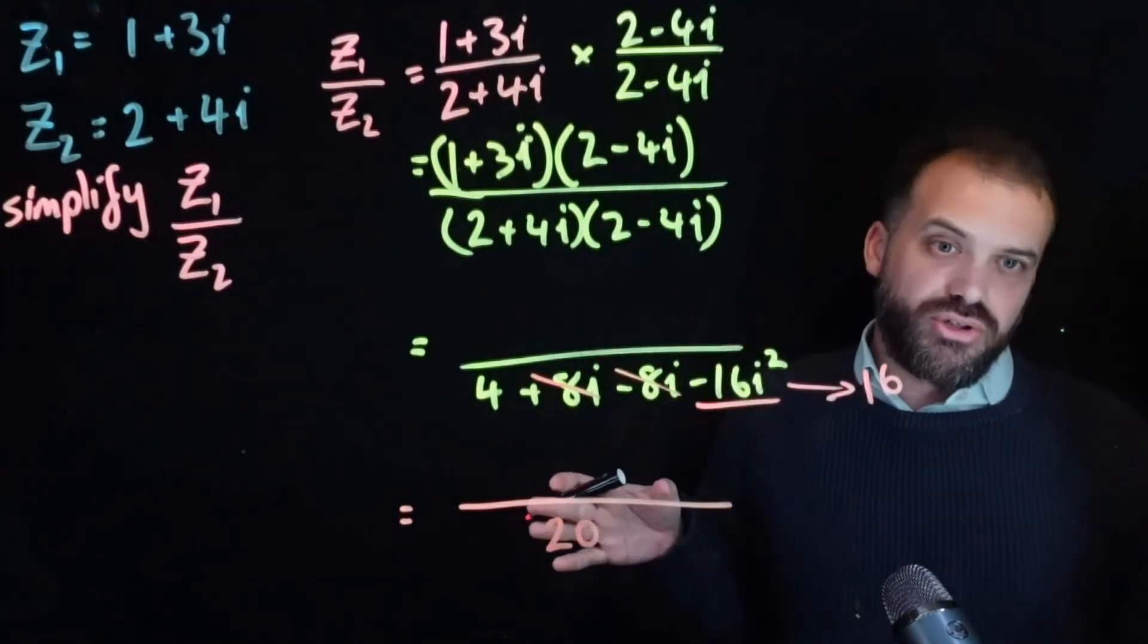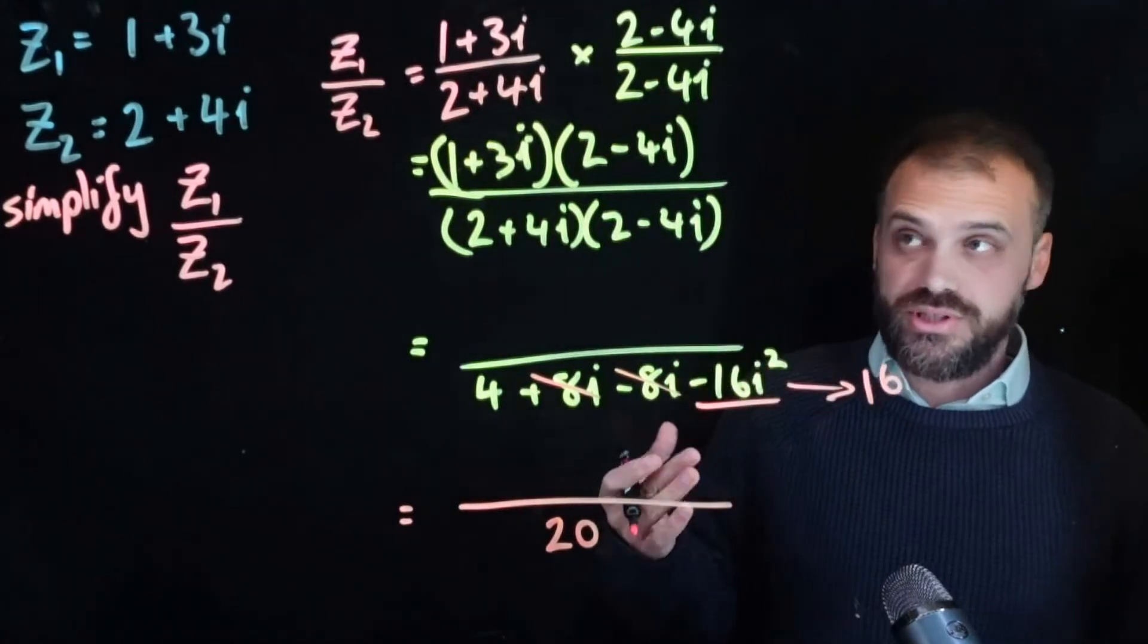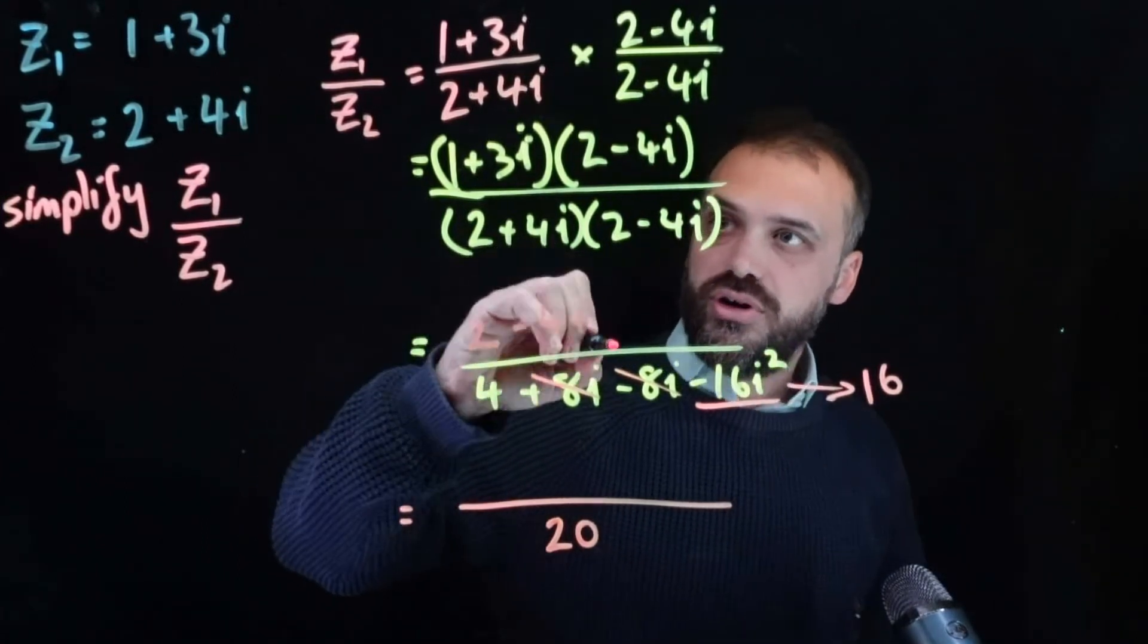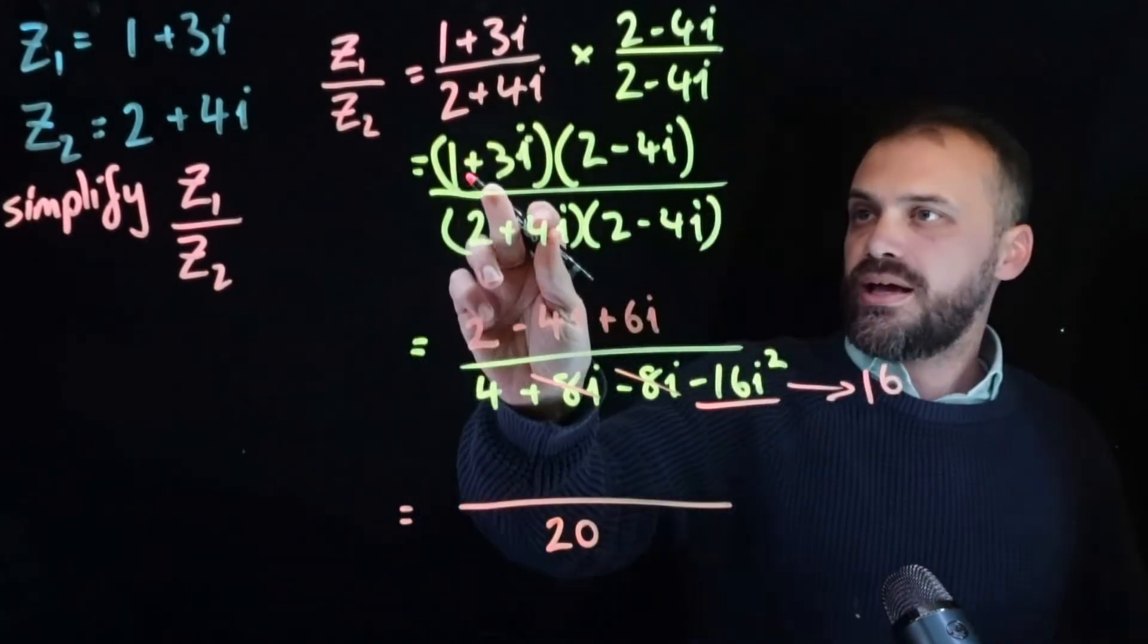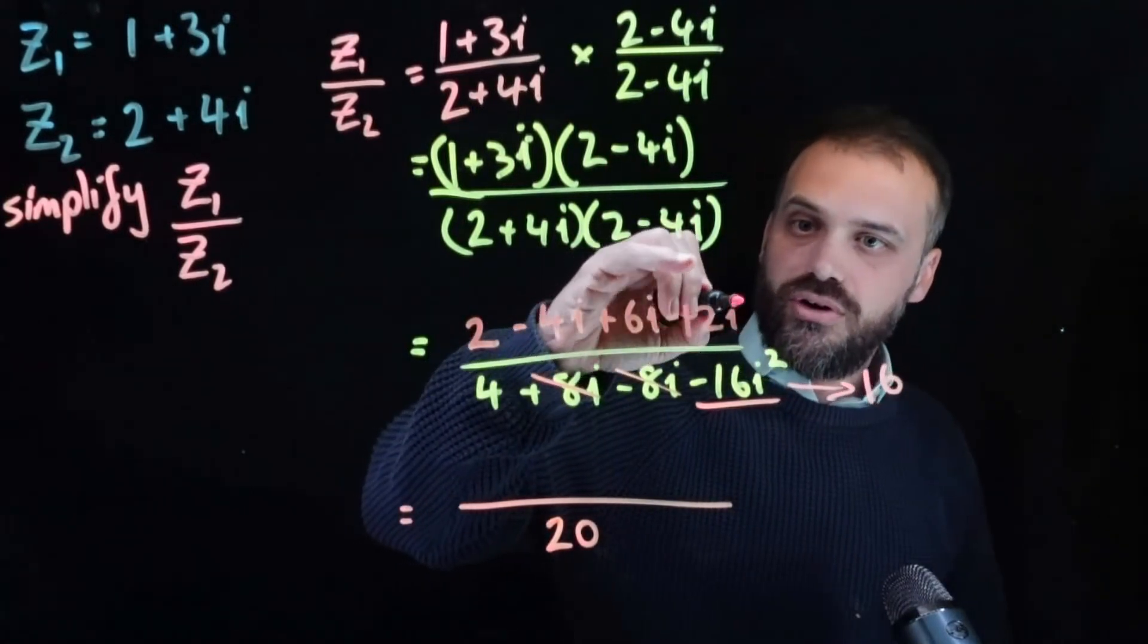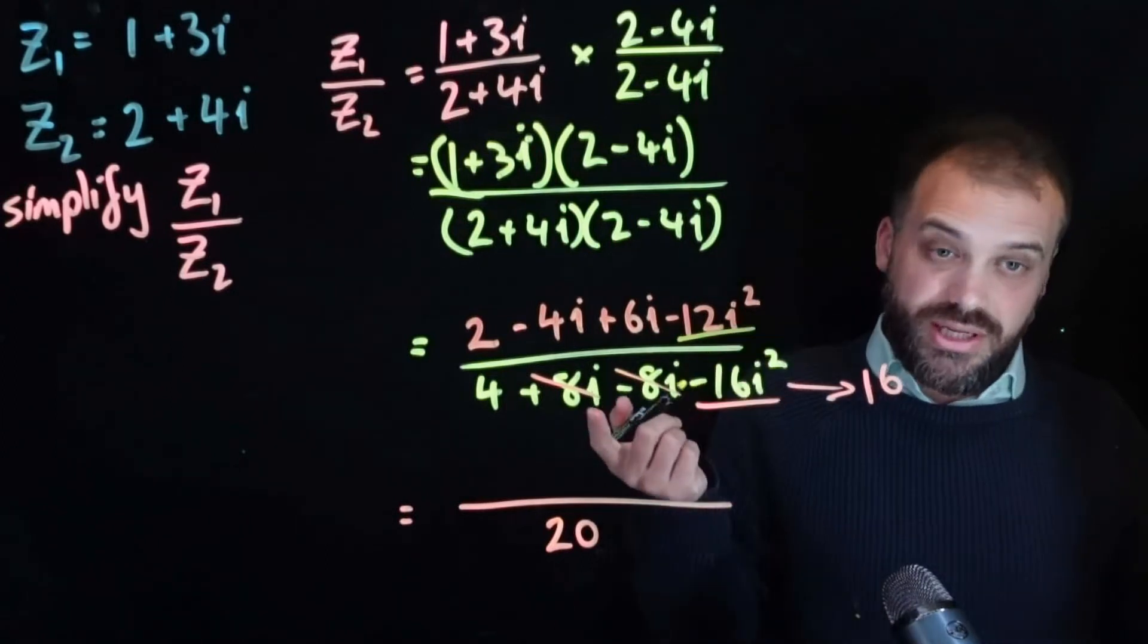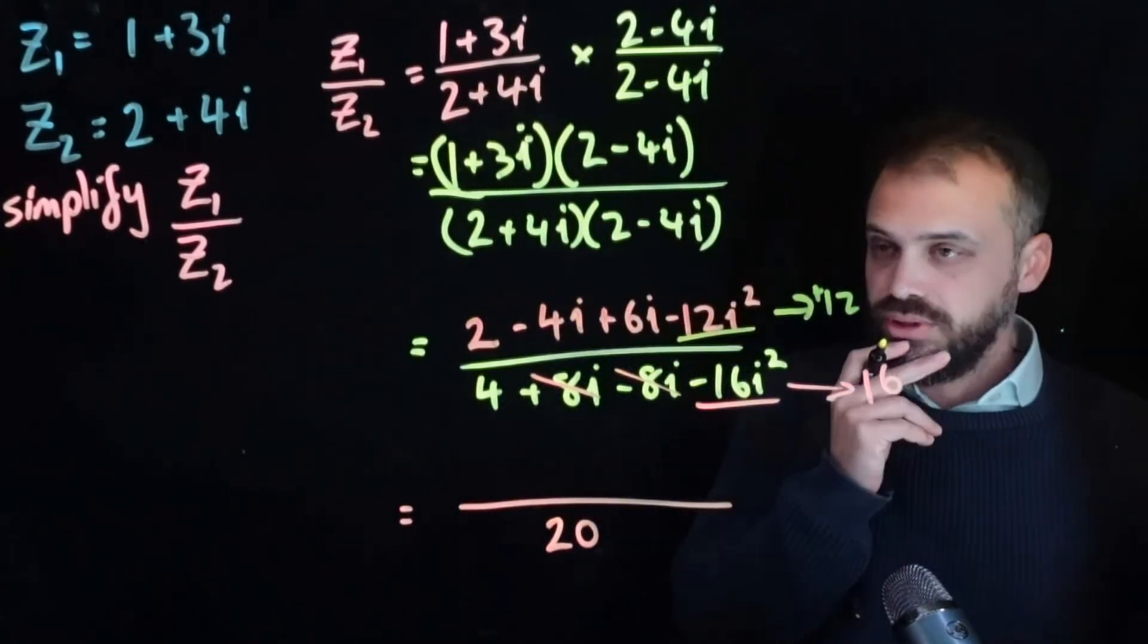Okay, the reason I've been neglecting the numerator is because there's not really anything interesting happening up there, apart from just following the process. So, 1 times 2 is 2, 1 times negative 4i is negative 4i, 3i times 2 is 6i, and positive 3i times negative 4i, which is, of course, negative 12i squared. i squared is negative 1, so negative 12i squared is positive 12.